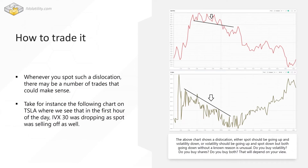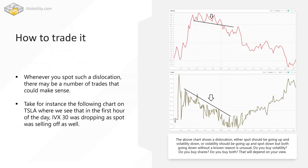In this example, we're looking at the Tesla chart. During the first hour of trading, the IVX — the bottom chart — was coming off. Spot first had an up move but then consolidated and started going back down a bit. We have this kind of divergence where spot goes down and vol goes down at the same time — this is not normal. Spot goes down, vol should go up; or if vol is going down, spot should be going up. The fact that spot is going down and vol is going down shows there is a dislocation. Either spot should be going up with volatility down, or volatility should be going up with spot down.